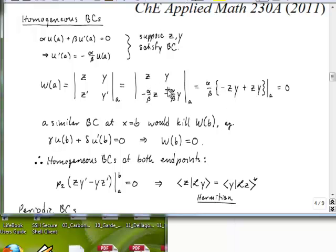That pretty quickly simplifies to alpha over beta with the ZY minus YZ. And so these two terms obviously cancel at location A, and so that makes this Wronskian at endpoint A equal to zero.